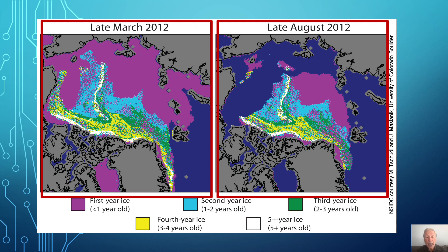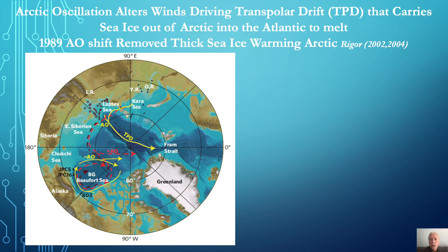However, the amount of thick ice can be greatly altered by the winds of the natural Arctic oscillation, which varies on time scales from weeks to decades to millennia. Peer-reviewed science by Ignatius Rigor determined that in 1989 the positive phase of the Arctic oscillation became more dominant and removed thick multi-year ice from the Arctic, allowing more heat to ventilate from the surface and subsurface, causing the recent rapid Arctic warming.